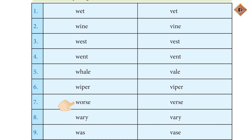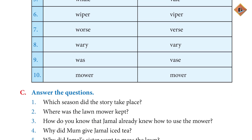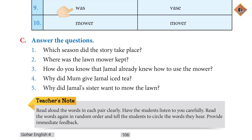Verse — W-R-S-E means to become worse, and Verse V-E-R-S-E means a line of poetry or an ayat. Vary W-A-R-Y means to be wary or cautious, and Vary V-A-R-Y means to become different. Was W-A-S is a helping verb, and Vase V-A-S-E is a flower pot.